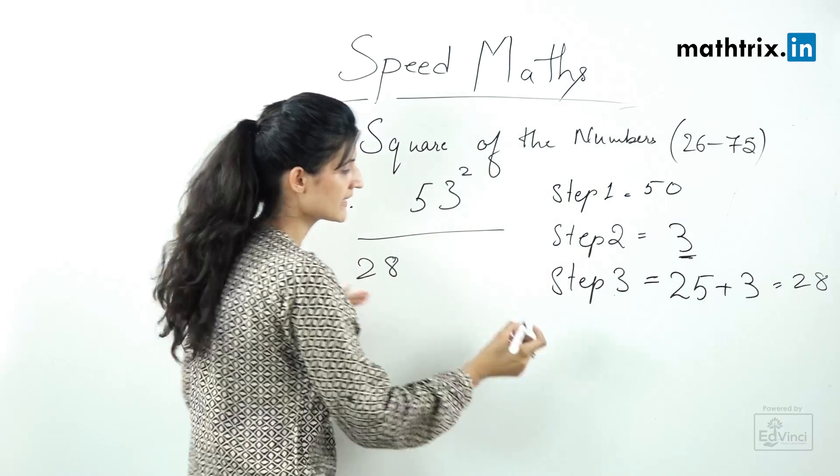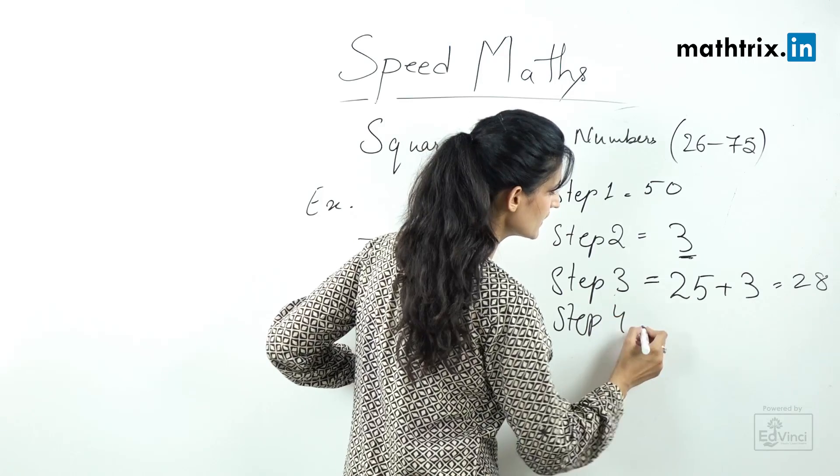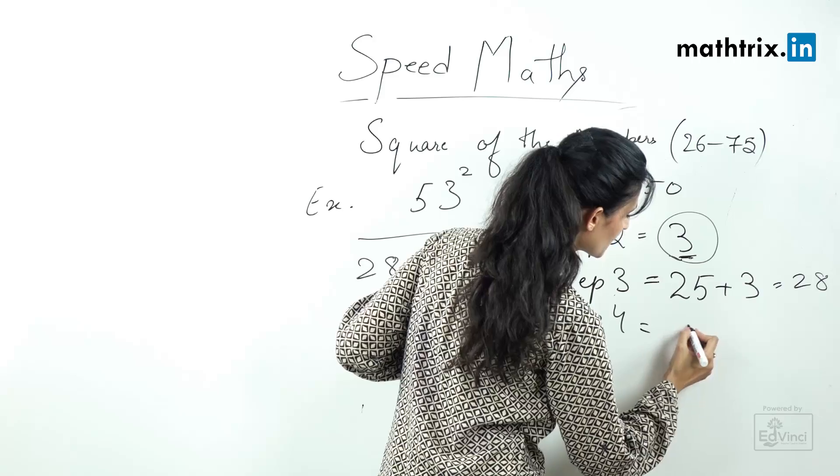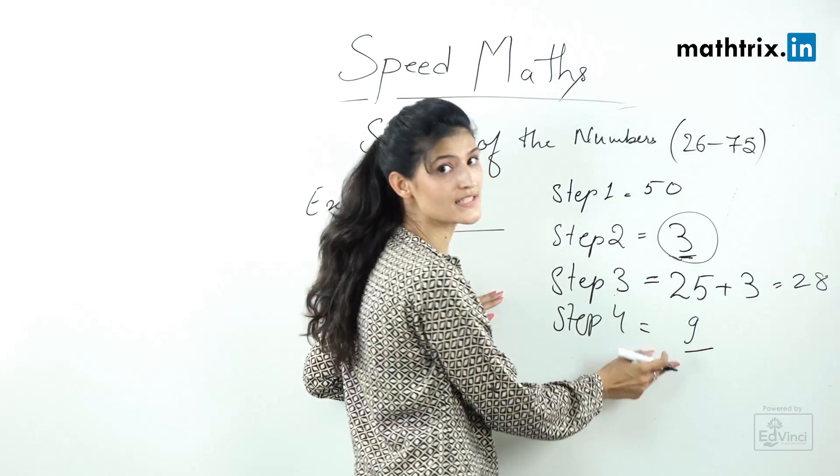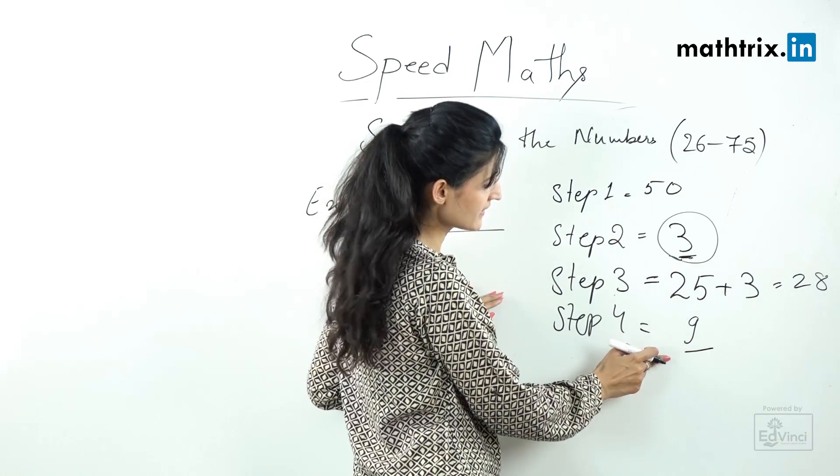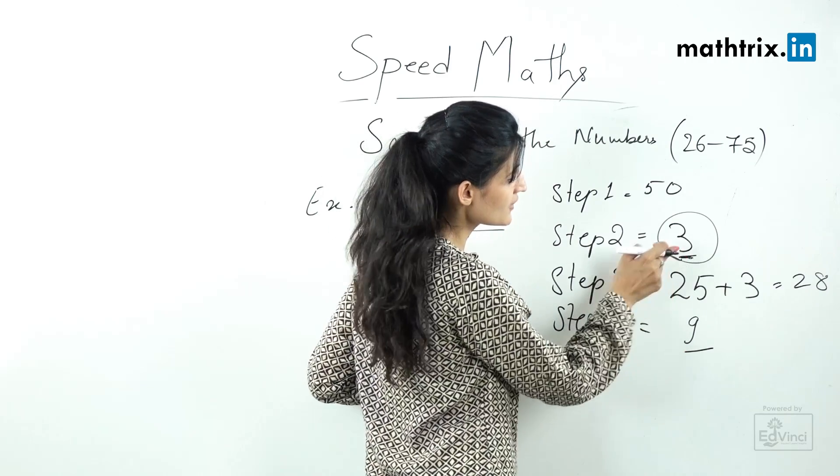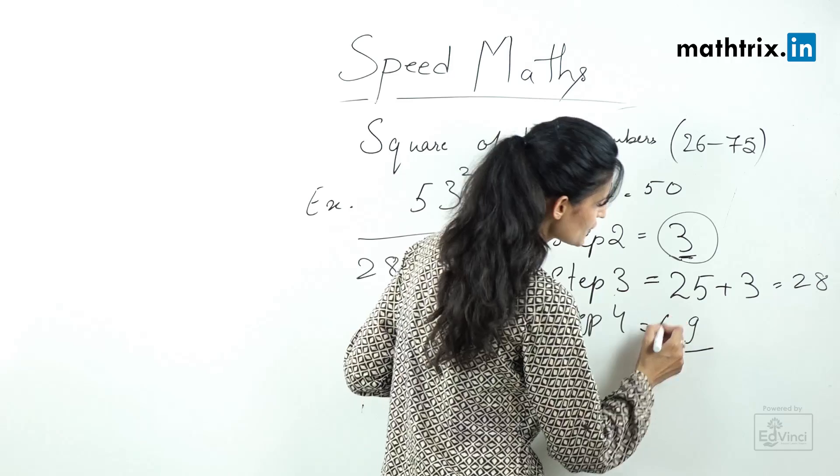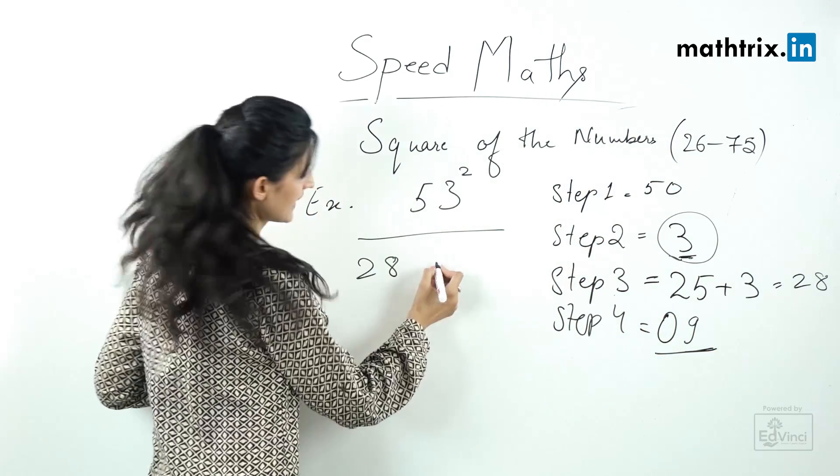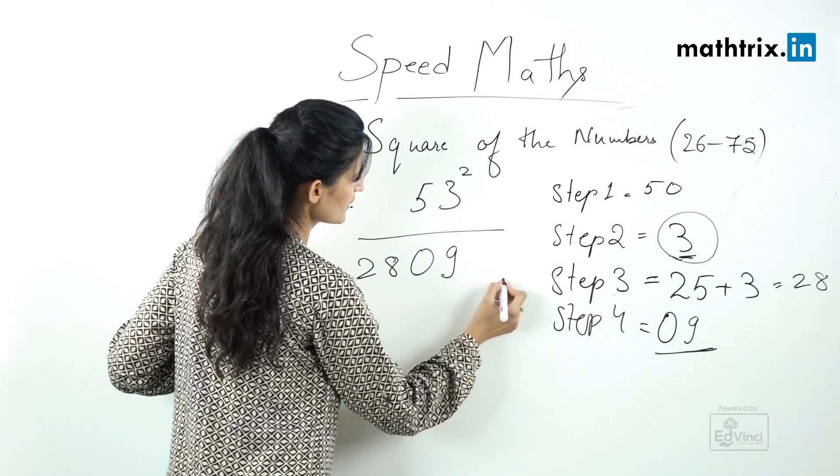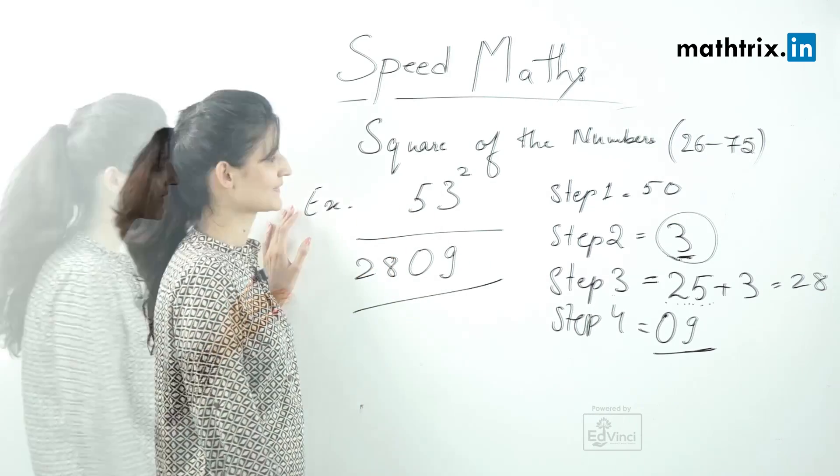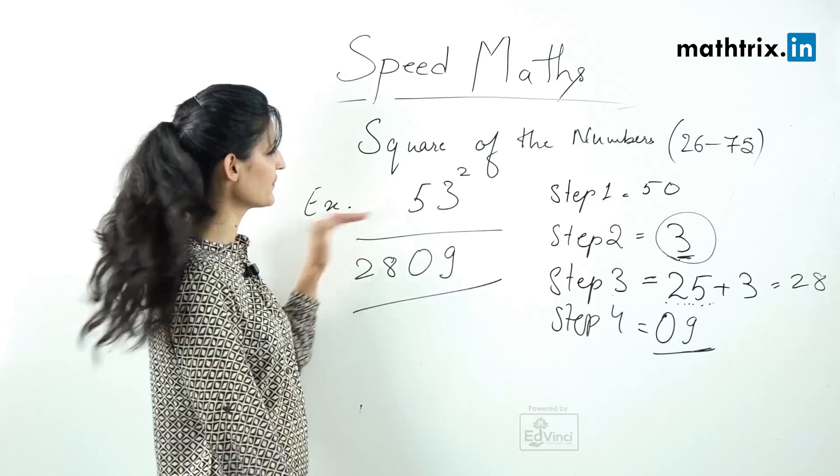Step number four, square the difference which is 9. As 9 is a one-digit number and the rule is that this squaring of the digit should give us two-digit number with the answer, so we should add 0 here. So our answer for 53 square is 2809.